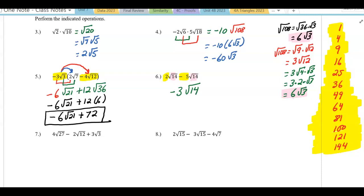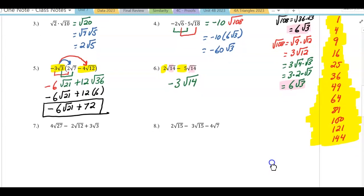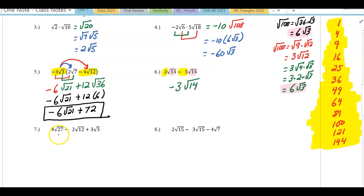In problem number 7, we have to simplify the radicals because root 27 breaks down. So this is 4 times the square root of 9 times the square root of 3, which becomes 4 times 3 square root of 3, which is 12 square root of 3.